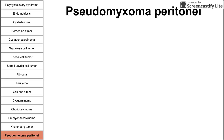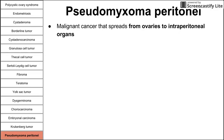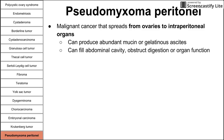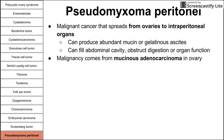Lastly, pseudomyxoma peritonei is a malignancy that spreads in the opposite direction — from the ovaries to intraperitoneal organs — whereas Krukenberg tumor spreads from the GI tract to the ovaries. Pseudomyxoma peritonei can produce abundant mucin and gelatinous ascites, sometimes filling the abdominal cavity and obstructing digestion and organ function. These malignancies usually arise from the mucinous adenocarcinoma variant in the ovaries, although they can also originate from an appendiceal tumor.